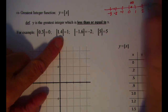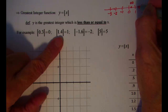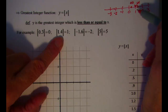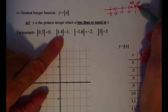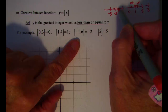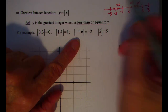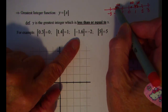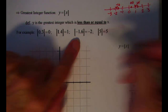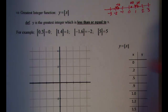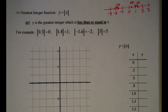1.4 is about here on the number line, and if we look to the left, we see that 1 is the greatest integer less than 1.4. Negative 1.6 is about here, so the integer to the left of that point is negative 2. And then if we look at 5 — because of the 'less than or equal to' — 5 is the greatest integer of 5.